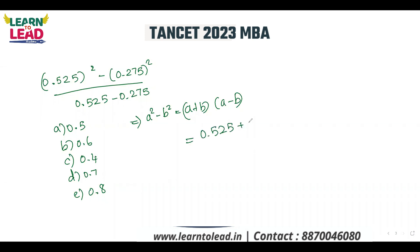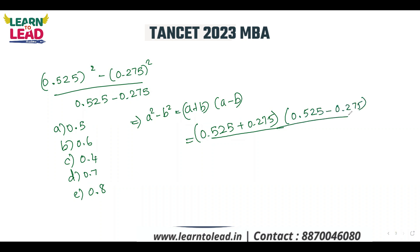0.525 plus 0.275 divided by — since A squared minus B squared equals A plus B into A minus B — the (0.525 minus 0.275) in the numerator and denominator cancel. So if I cancel, I will get 0.8 as the answer.